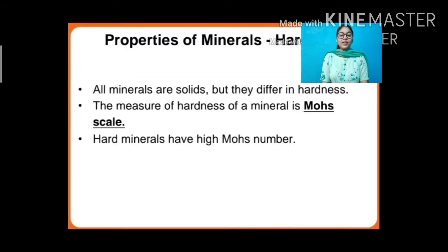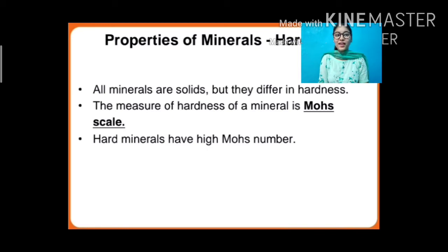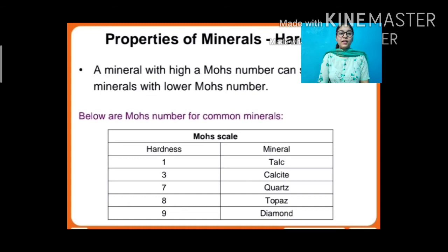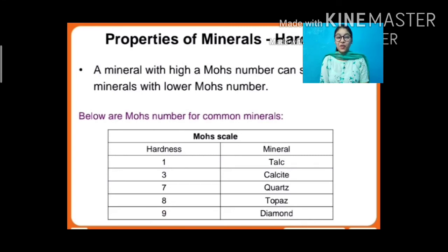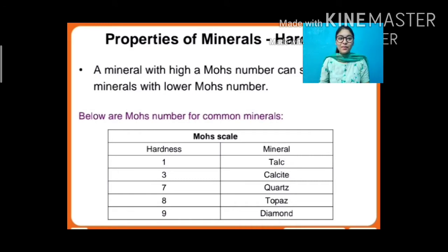The first property: all minerals are solid but they differ in hardness. The measure of hardness of a mineral is the Mohs scale. Hard minerals have a high Mohs number and minerals which are soft have a low Mohs number. A mineral with a high Mohs number can scratch minerals with a lower Mohs number. The Mohs numbers for common minerals are: talc = 1, calcite = 3, quartz = 7.